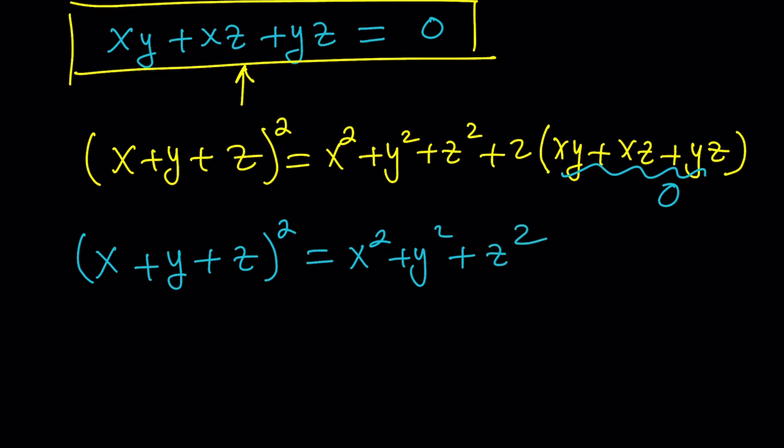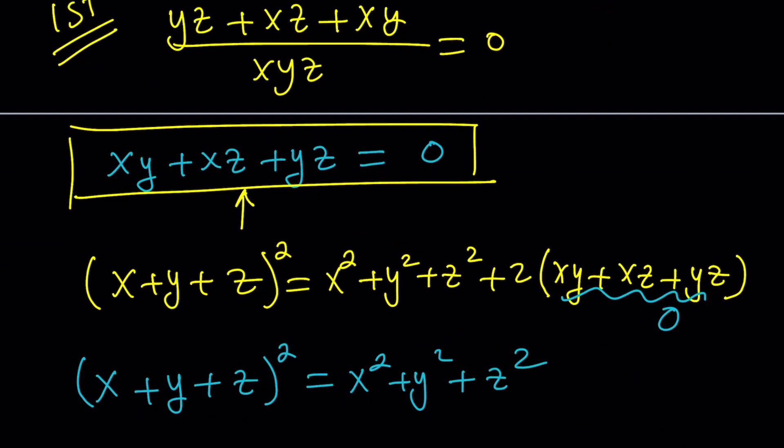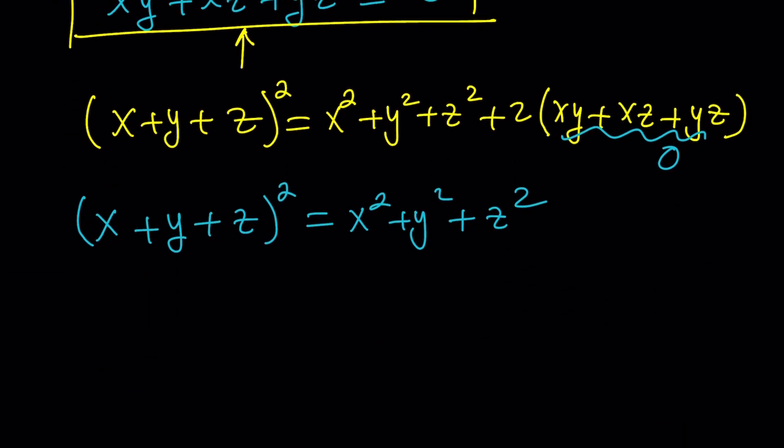What does that mean in terms of the expression we're trying to evaluate? We have x plus y plus z, so that means we need to square root both sides. But when you square root a square, you get two solutions.